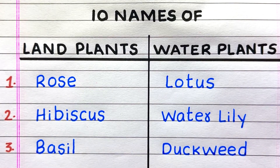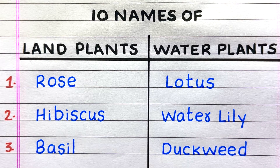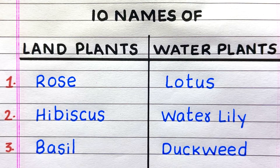The name of the first land plant is rose plant, second hibiscus plant, third basil plant. The name of the first water plant is lotus plant, second water lily, third duckweed.